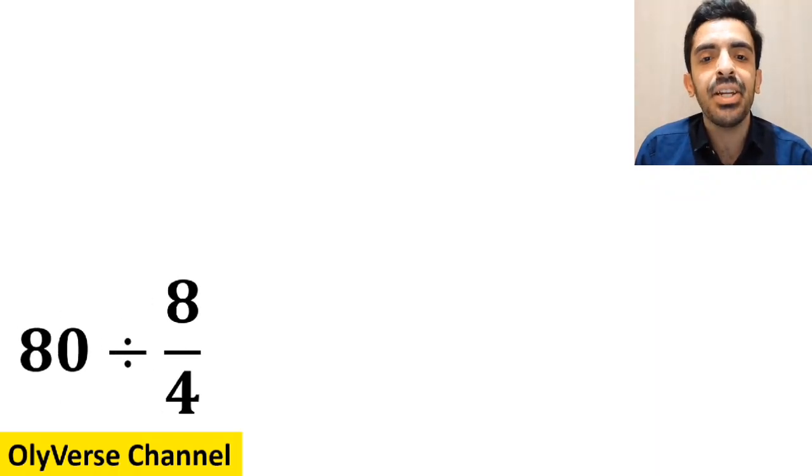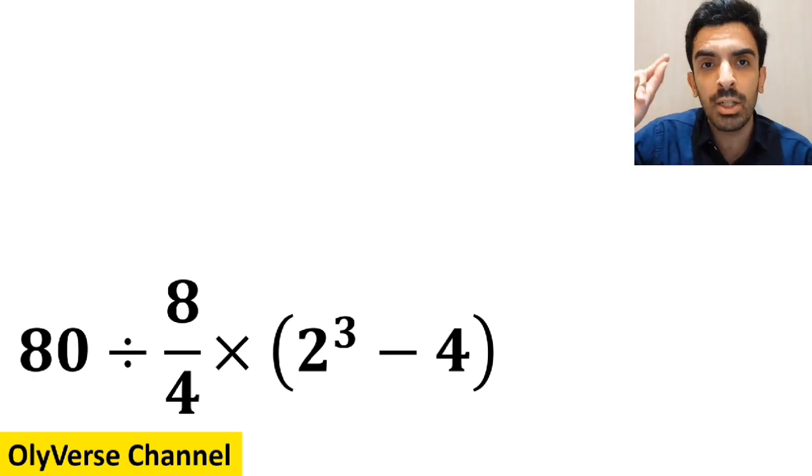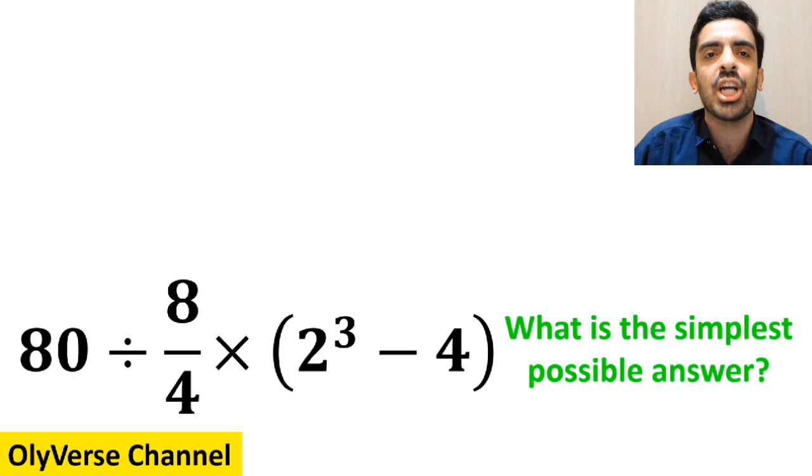If we have the expression 80 divided by 8 over 4 multiplied by open parentheses 2 to the power of 3 minus 4 close parentheses, then what is the simplest possible answer to this question?